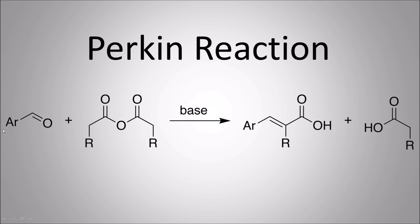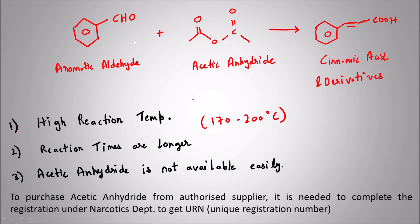We have an aromatic aldehyde over here. When we add to this aromatic aldehyde any anhydride — it could be acetic anhydride or any anhydride — and we add a base, what we get is a cinnamic acid derivative. This is basically the Perkin reaction. Now let's move and see an example.